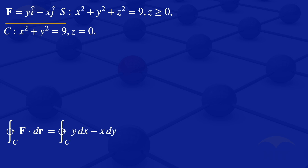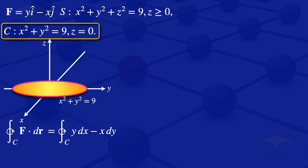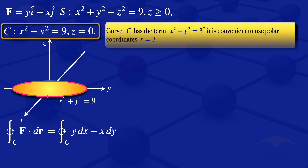Our curve C is x² + y² = 9, which is a circle centered at the origin with radius 3. I will sketch that curve, putting in the x-axis, y-axis, and z-axis, and draw the circle x² + y² = 9 centered at the origin with radius 3, noting the positive orientation.